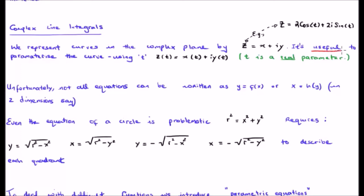So it's useful to parameterize a curve using the parameterization variable and we introduce a new variable, a third variable from x and y and we call it t. Therefore instead of writing z as a function of x and y, we write z as a function of t, x as a function of t and y as a function of t. t of course is a real parameter as opposed to an imaginary parameter.